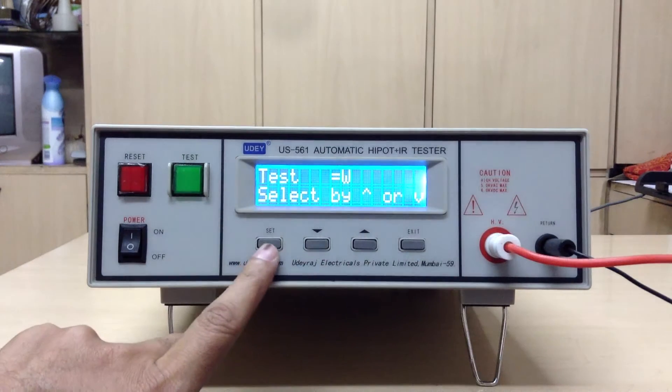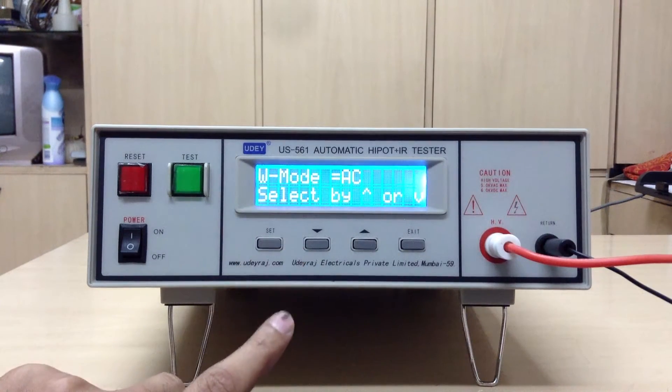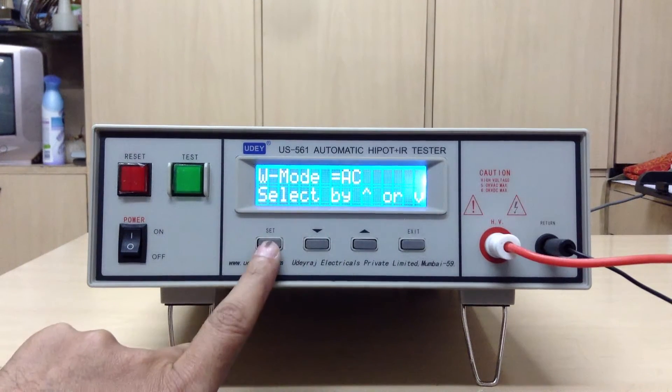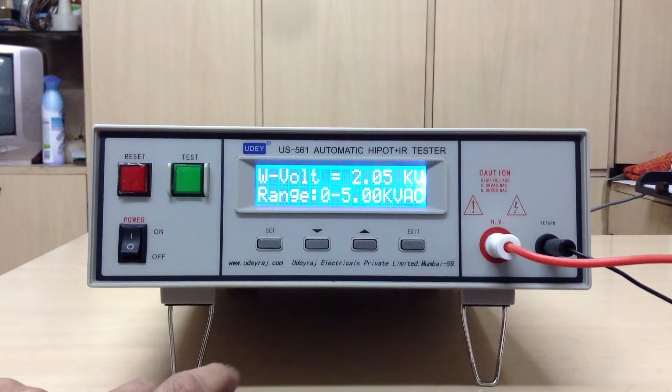After you select withstand test, you have a choice of selecting AC output or DC output. We select AC output, and then in AC you have a range from 0 to 5 KV. You can select whatever you want by up and down key.